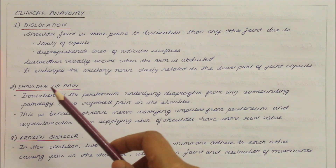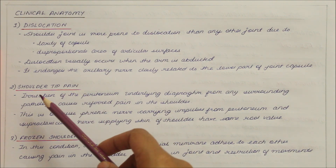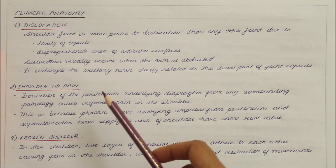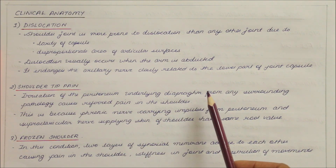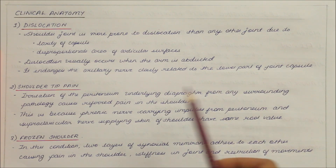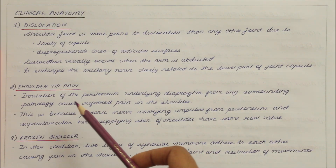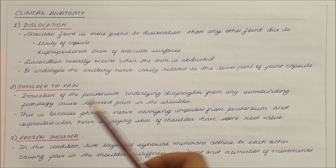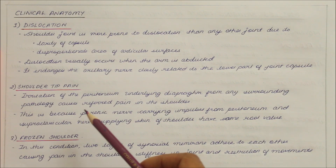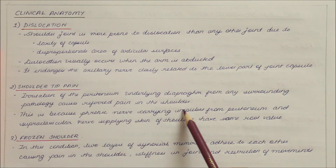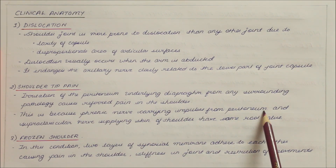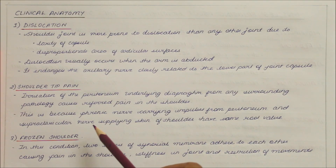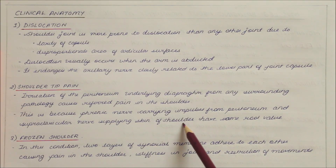In shoulder tip pain, irritation of the peritoneum underlying the diaphragm from any surrounding pathology causes referred pain in the shoulder. This is because the phrenic nerve — carrying impulses from the peritoneum — and the supraclavicular nerve — supplying the skin of the shoulder — have the same root value.